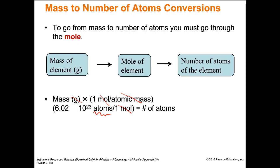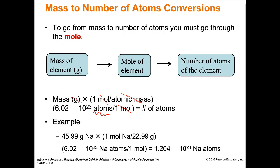Sample calculation: we have 45.99 grams of sodium, and we want to know how many atoms that is. First, multiply by one over the molar mass of sodium — essentially dividing by the molar mass. Then multiply by Avogadro's number, and that gives you the number of atoms. The grams cancel with grams, the moles cancel with moles, and you're left with just atoms of sodium.